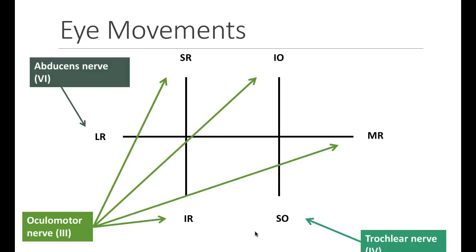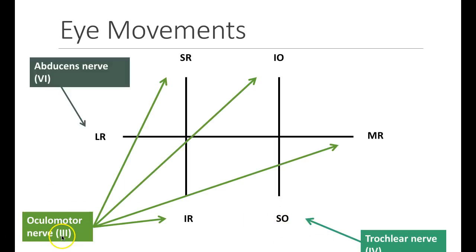There are three nerves that supply these muscles. The abducens nerve, or the sixth nerve, supplies the lateral rectus. The trochlear nerve, or the fourth nerve, supplies the superior oblique. The oculomotor nerve, or the third nerve, does the remainder, which includes the superior rectus, the inferior oblique, the medial rectus, and the inferior rectus. It also supplies the levator palpabrae and the pupil.